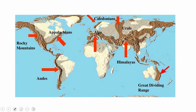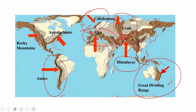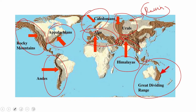Now let us look at mountain ranges on the world map. The Himalayas and Hindu Kush are visible in South Asia. The Great Dividing Range is in Australia. The Urals are in Europe. The Caledonians are also part of Europe. Then there are the Alps. The Andes are in South America. The Rocky Mountains are in North America. The Urals extend into Russia and neighboring regions. These are the various mountain ranges across the world.